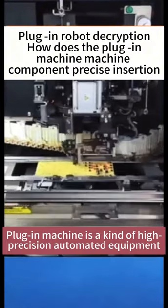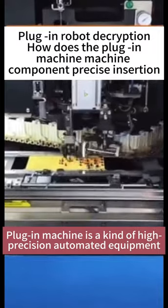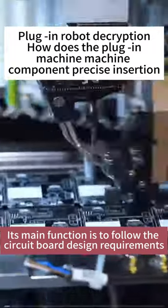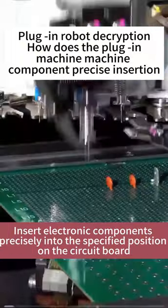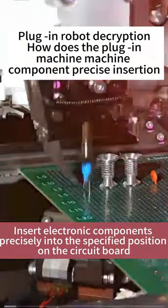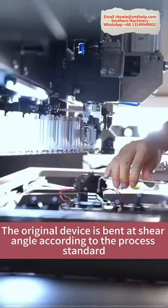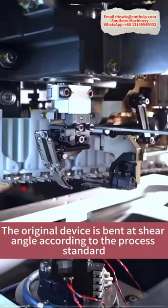Plug-in machine is a kind of high-precision automated equipment. Its main function is to follow the circuit board design requirements, insert electronic components precisely into the specified position on the circuit board. The original device is bent at shear angle according to the process standard.